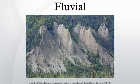Fluvial processes include the motion of sediment and erosion or deposition on the riverbed. Erosion by moving water can happen in two ways.